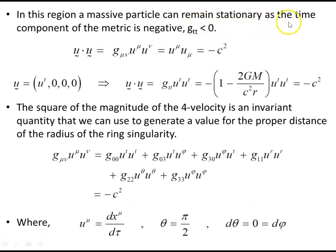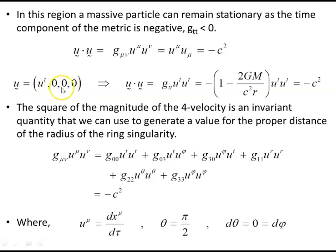In this region, a massive particle can remain stationary — the time component of the metric is negative just in this ring singularity region. Outside the ring singularity and up to the outer stationary limit surface, that's not the case. But within the ring singularity itself, because the metric component g_tt is negative, a particle can remain stationary — not moving in its spatial components — and just traveling through time at a fixed location. That's not possible in the other regions within the ergosphere.